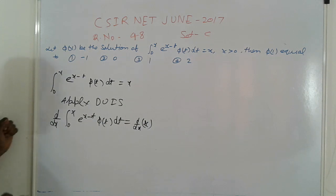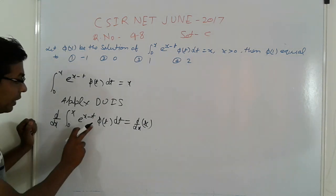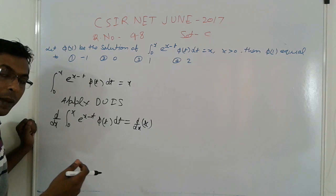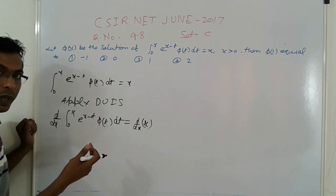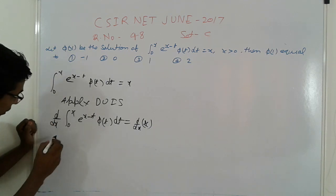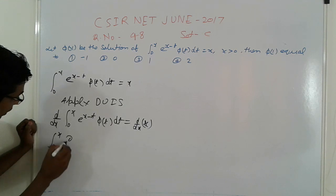Here x is the parameter and t is the variable. So use the Leibniz theorem, the DUIS second method, for simplification.